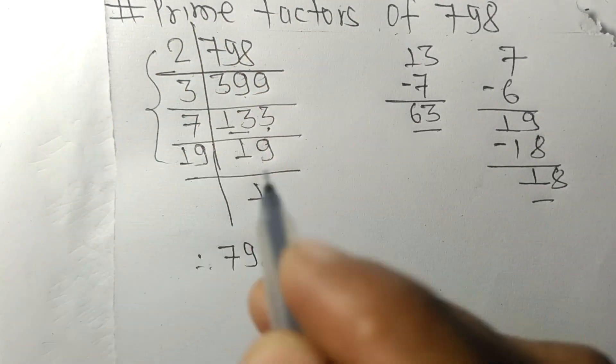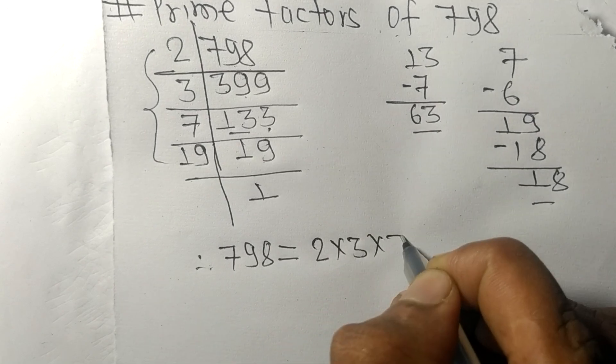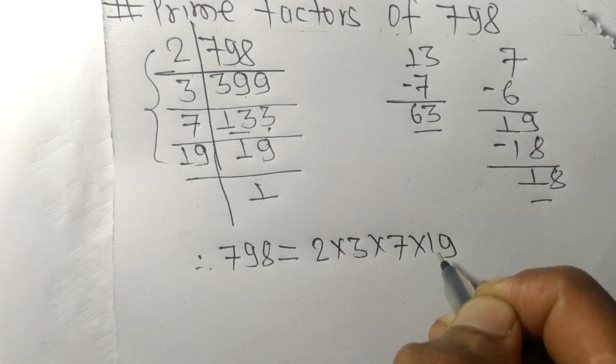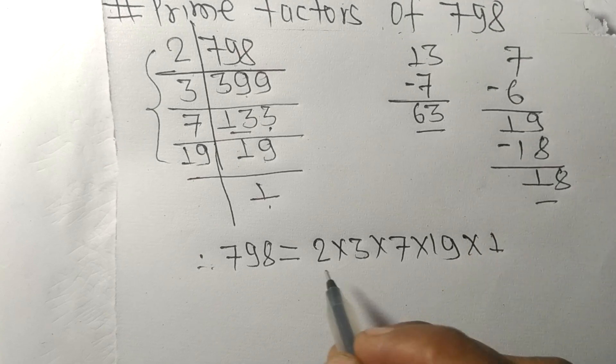So 2, 3, 7, 19, and 1 are the prime factors of 798. That's all for today, thanks for watching.